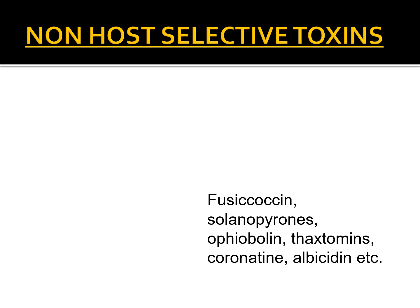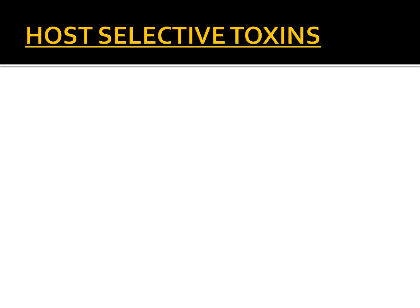To summarize non-host selective toxins: these are toxins produced by organisms that can act on the host plant as well as on other species of plants. They are not involved directly in causing the disease but increase the extent of disease or destruction. Now coming to host selective toxins — these are toxins which are essential for the development of the disease.